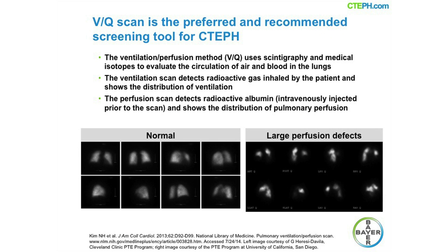The VQ scan is highly sensitive for the presence of Chronic Thromboembolic Disease, and it's also important to note that negative findings on the VQ scan effectively rule out the presence of CTEPH. Right heart catheterization is used to measure hemodynamic values and to confirm the diagnosis of pulmonary hypertension. And finally, pulmonary angiography is typically used to confirm the presence of CTEPH.